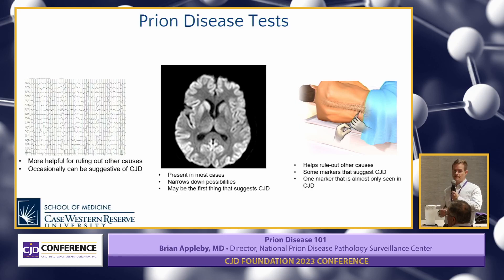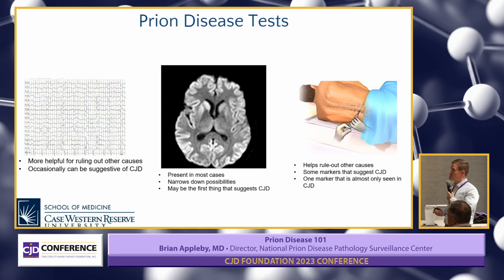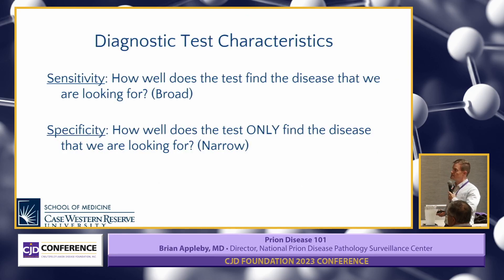The spinal tap, very importantly, helps rule out other things such as infections and inflammation. We do have some markers that could be suggestive of prion disease. And we have one marker that's extremely specific, meaning it's highly likely to be prion disease if it's positive.